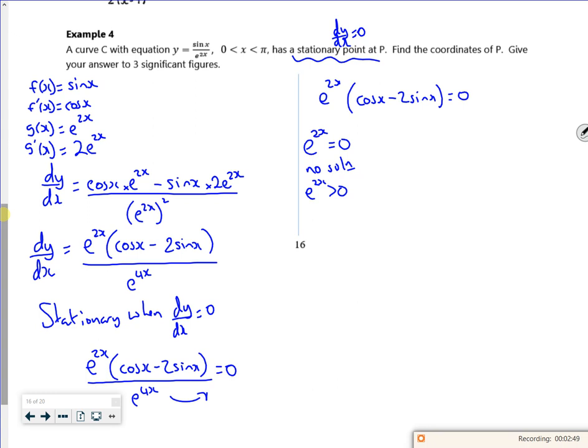The thing is, if I had cancelled here, I'd lose the fact that I might have had a solution there. I haven't, but I might have done. So you've just got to be a little bit careful. Then I've got cos x minus 2 sin x is zero.